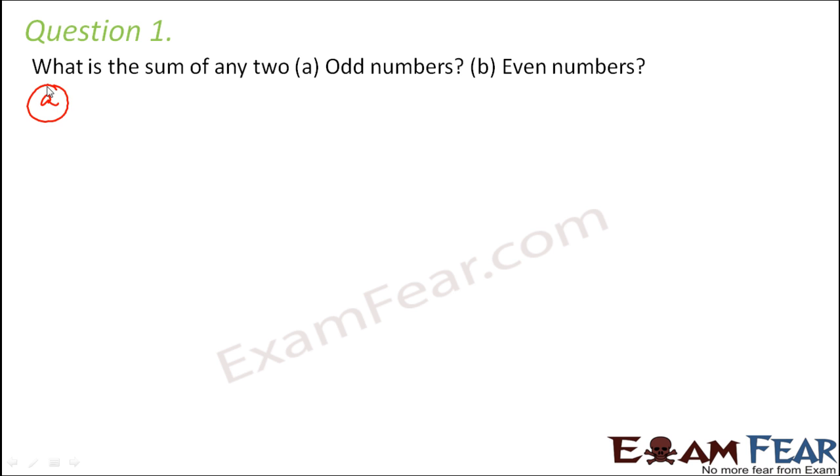So let us start with the first part that is sum of odd numbers. Let us consider two odd numbers like 3 and 5. When you add them, you get 8. Consider 5 and 9. When you add them, you get 14. Add 11 and 13, you get 24. When you add 11 and 3, you get 14. 11 plus 15, you get 26.